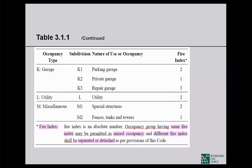The fire index is an absolute number. Occupancy groups having the same fire index may be permitted as mixed occupancy, while those with different fire indexes shall be separated or detached as per the provisions of this code. This introduces three new terminologies: mixed occupancy, separated occupancy, and detached occupancy.